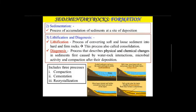Diagenesis describes the physical and chemical changes in the sediment. These changes are called diagenetic changes and the process is called diagenesis. Diagenesis includes three processes: compaction, cementation, and recrystallization.